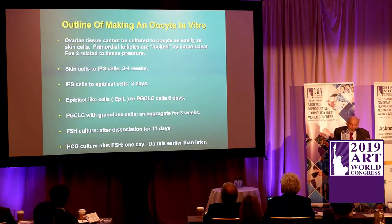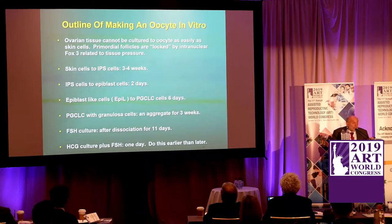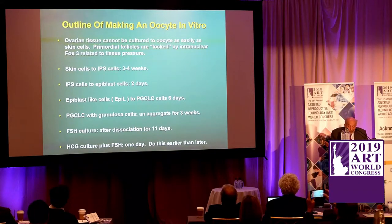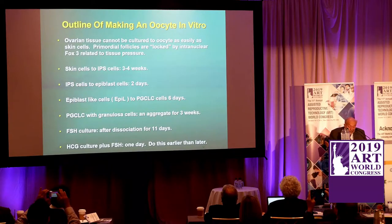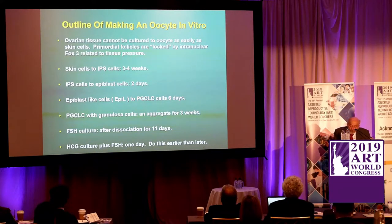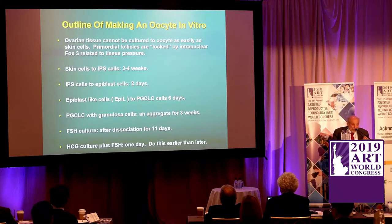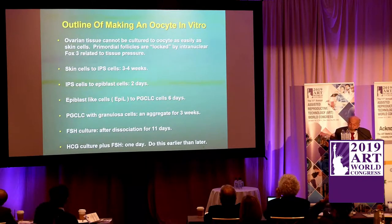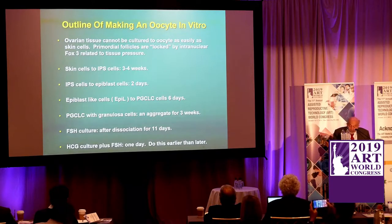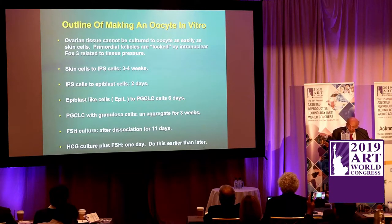The outline is simple. Ovarian tissue can't be cultured easily to an oocyte from skin cells because primordial follicles are locked by intranuclear FOX3 related to tissue pressure. You make skin cells to IPS cells — that takes three to four weeks. IPS cells to epiblast cells takes two days. Epiblast-like cells become PGC-like cells in six days. Then you incubate PGC-like cells with fetal granulosa cells — not adult granulosa cells, which would do nothing — for about three weeks, recapitulating what happens in the fetus. Finally, you culture oocytes in FSH for 11 days after dissociation, HCG for one day, and you have a competent oocyte.